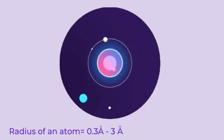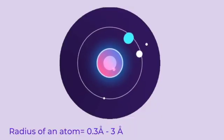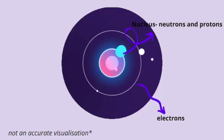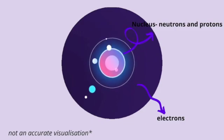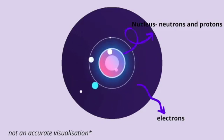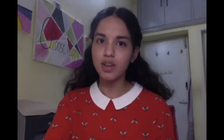We all know that the universe is made up of really, really tiny atoms. The radius of an atom can vary between 0.3 angstrom to 3 angstrom. Naturally, the next question which arises is: what are atoms made up of? Atoms are made up of a centrally positively charged nucleus along with electrons revolving around it. The nucleus consists of neutrons and protons. But then, what are neutrons and protons made up of? Are there any other subatomic particles like neutrons, protons, and electrons?